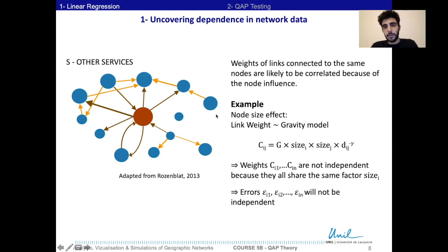For example, in the case of the node size effect, where the link weight follows the gravity model, all the links incident to the same node will not be independent because they all share the same factor: the size of the node to which they are connected. Therefore, all the errors linked to these weights will not be independent.